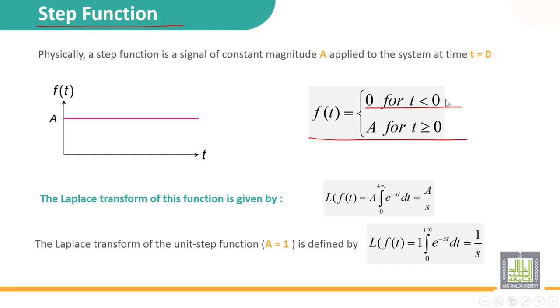The Laplace transform of this function is given by the Laplace transform of f(t) equal to A. Because it's constant, it can be removed out: integral from 0 to plus infinity of 1 times e^(-st) dt, equal to A over s.